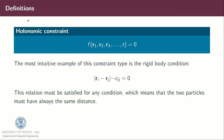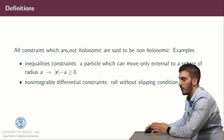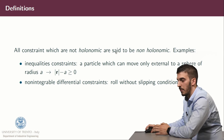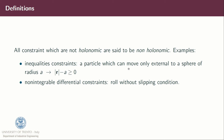A holonomic constraint is a function of the positions R1, R2, R3, ..., Rn and time equal to zero. The most intuitive example is the rigid body constraint, where the distances between all points must be constant over time, meaning two particles are always at the same distance. All constraints which are not holonomic are said to be non-holonomic. Examples include inequality constraints, like a particle which can move only external to a sphere of radius a, so the modulus of the position vector R minus a must be always greater than or equal to zero, or non-integrable differential constraints like the rolling without slipping condition.